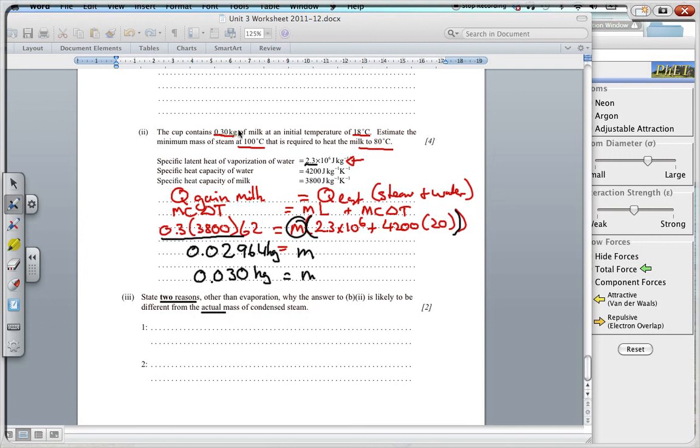And, let's say, 2 reasons other than evaporation, why the answer to B2 is likely to be different from the actual mass. Well, in heating the milk, obviously the milk is in some container, so the container will also need to be heated. And, the vapor, there will be some vapor lost, not all of it will condense, some will be lost.